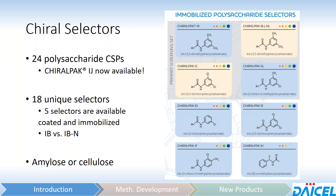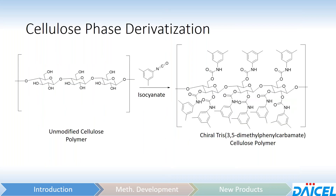In some cases you have a choice between amylose or cellulose, which actually imparts some very unique separation characteristics, which I will show you in a few slides from now. We'll look at the derivatization process briefly — it's important to understand, especially when we talk about solvent restrictions. You can easily take a cellulose or amylose unmodified polymer and react it with a derivatized isocyanate —